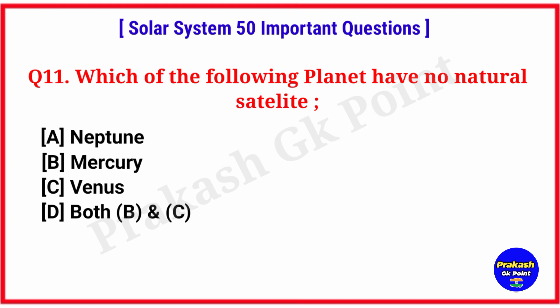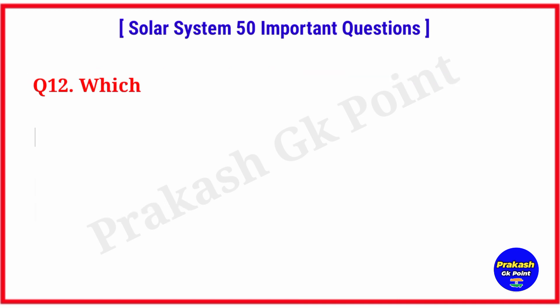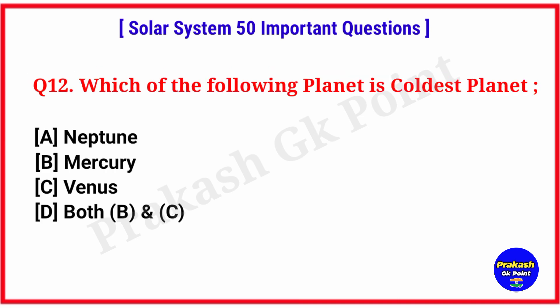Which of the following planets have no natural satellite? Answer: option D, both B and C, Mercury and Venus. Which of the following planets have no natural satellite? Answer: option A, Neptune.